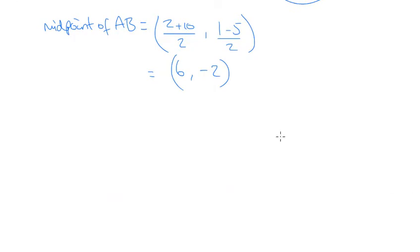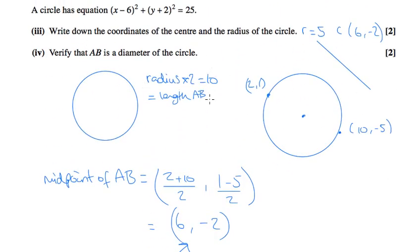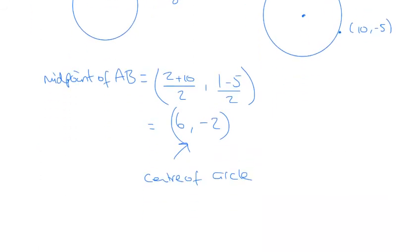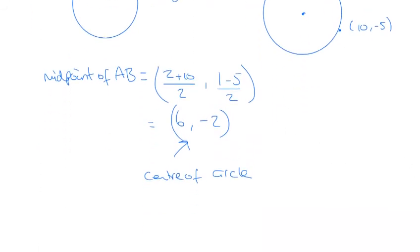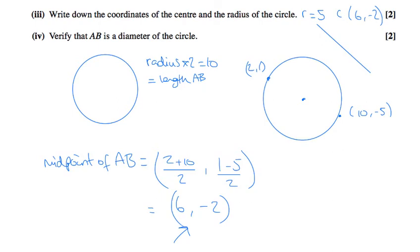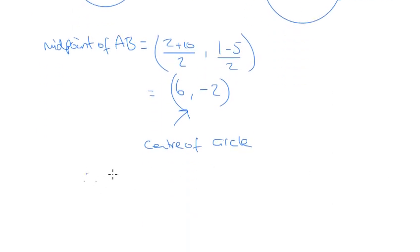So because this is the centre of the circle, and the diameter, the length of AB is the correct length, that is enough to show that AB is the diameter.